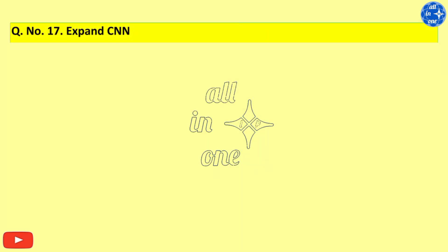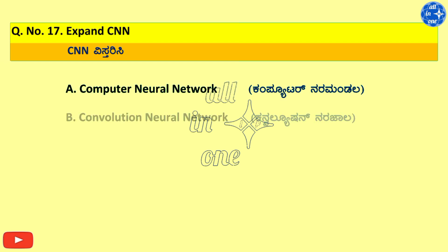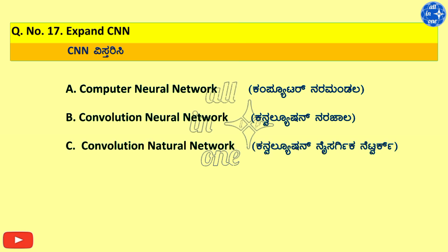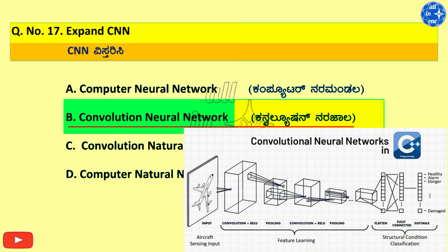Question number 17. Expand CNN. Right answer is B. Convolutional Neural Network.